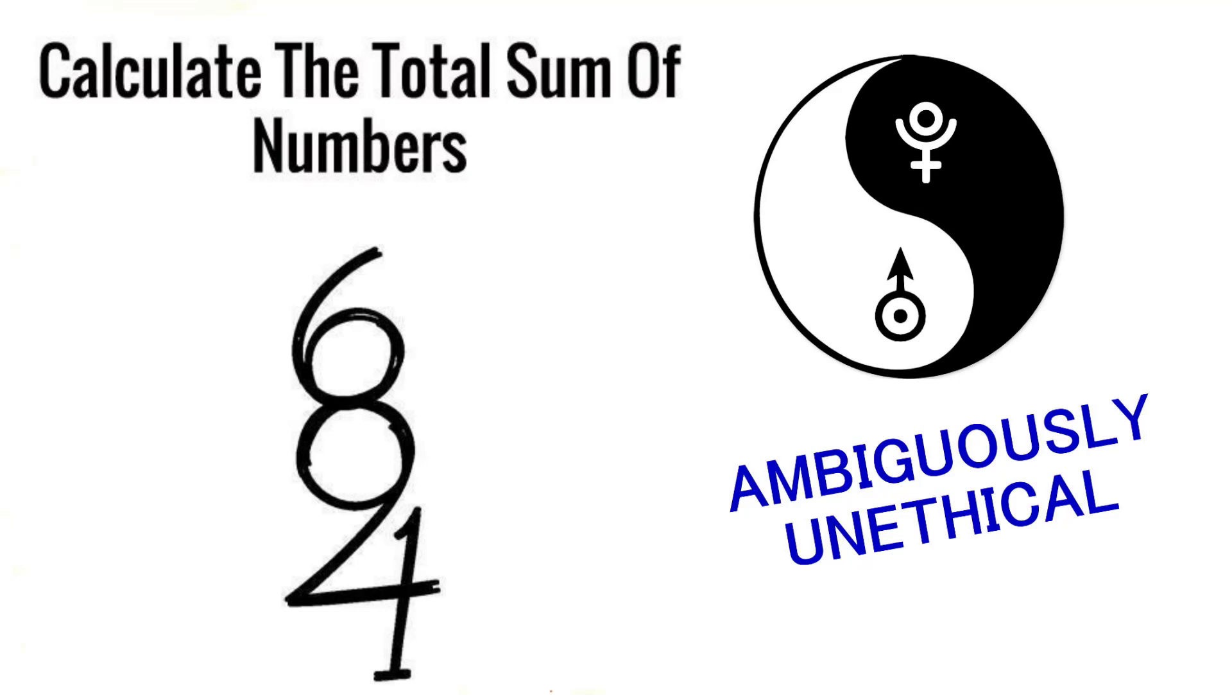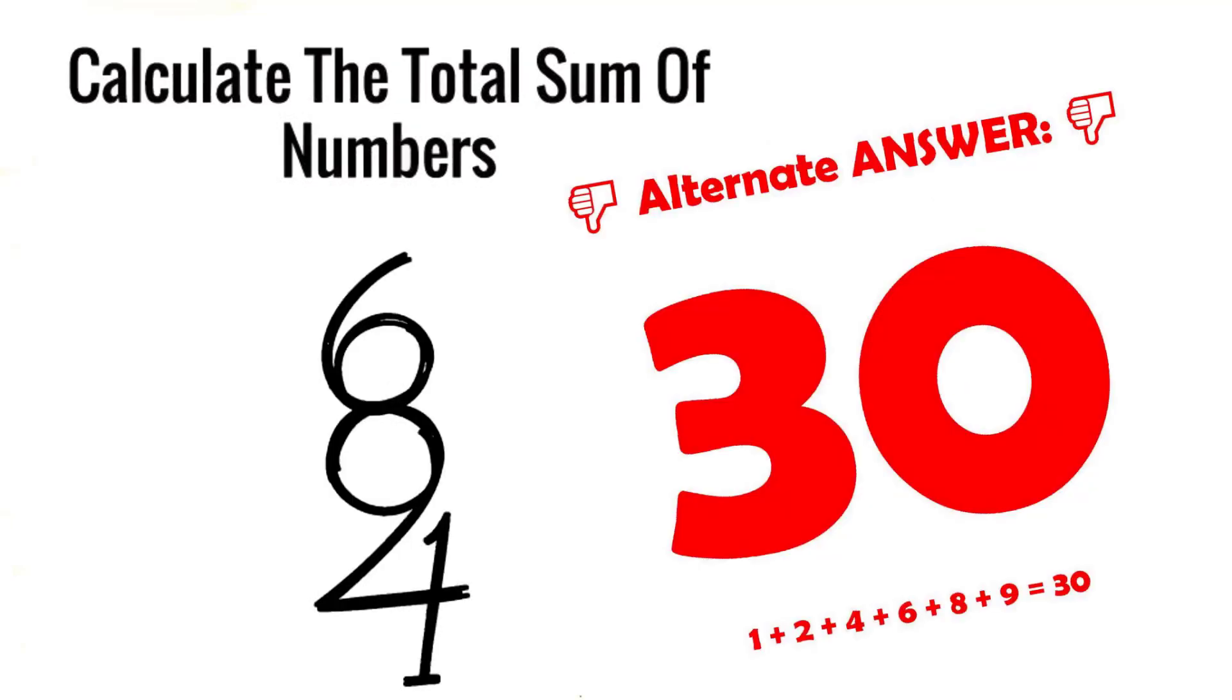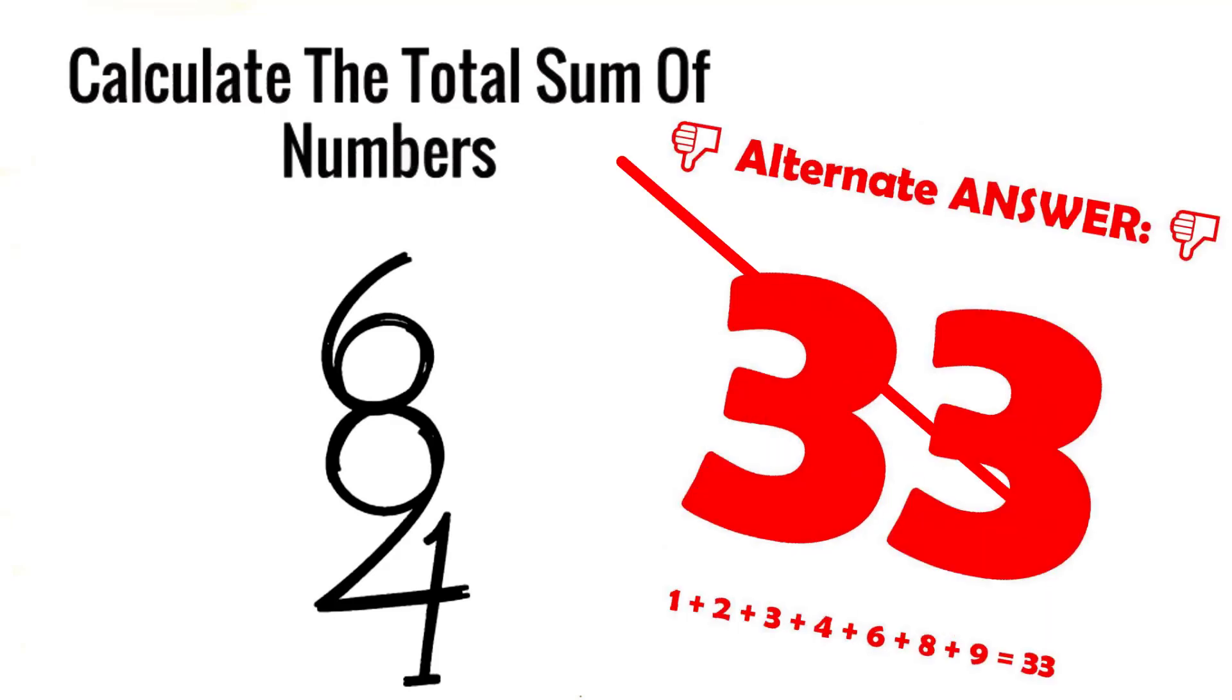But first, here are some incorrect answers I've seen floating on the interweb. This answer is incorrect because it is missing two numbers. This answer is incorrect because it is missing one number.